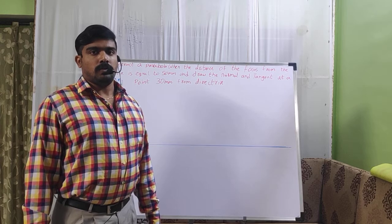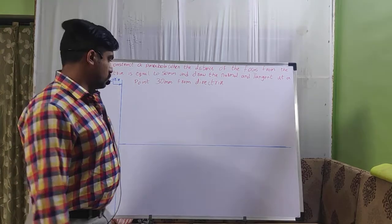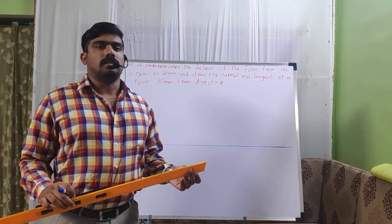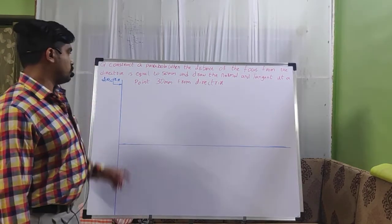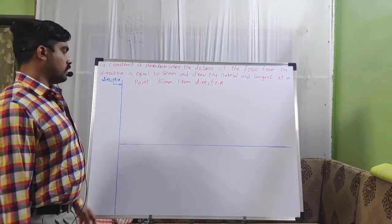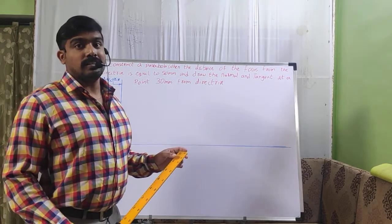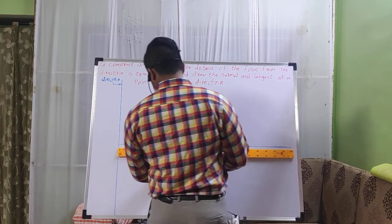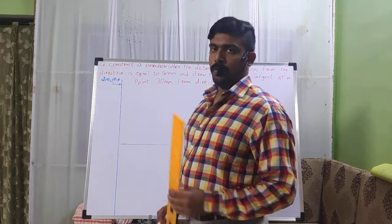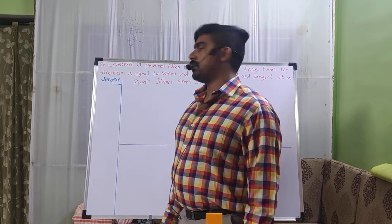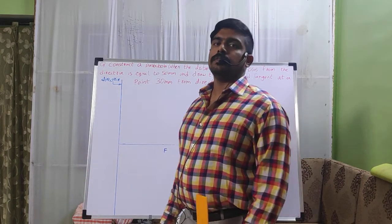Since the eccentricity is 1, the distance from the focus and the directrix will be equal. Now we will find out the focus point. The focus is at a distance of 50 mm. First of all, we need to draw the directrix line — a vertical line — and then the horizontal axis. Then we find out the fixed point: the focus point is at a distance of 50 mm from the directrix. Using the bisecting method or a scale, we find out the midpoint, which gives us the vertex point.